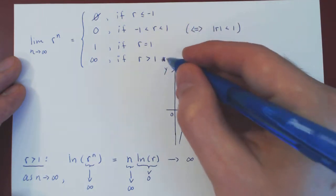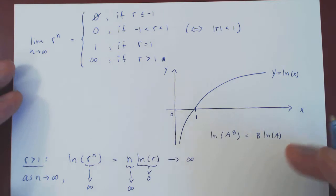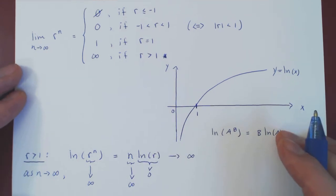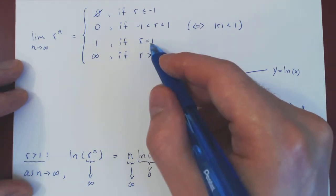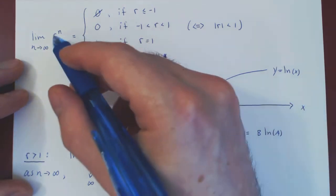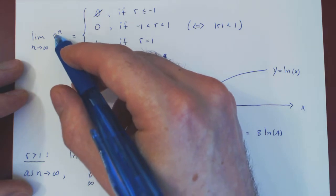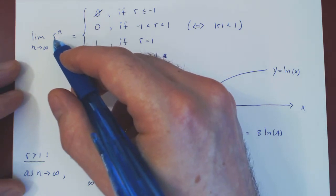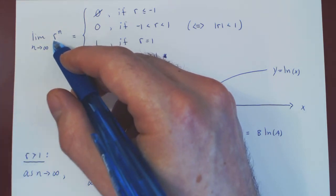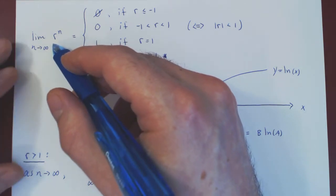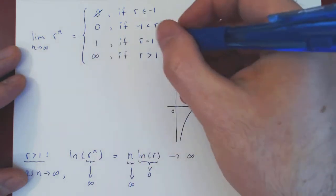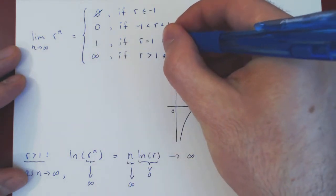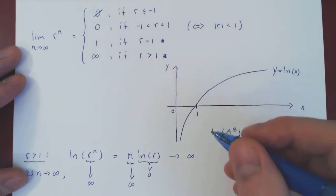When r equals 1, this is trivial: 1 to the n is always 1, so the sequence is constantly 1, 1, 1, 1 forever, which clearly converges to 1.